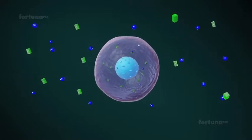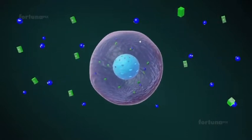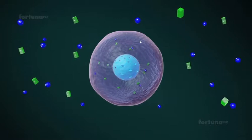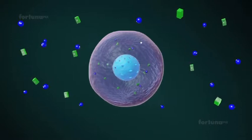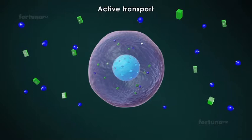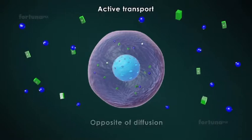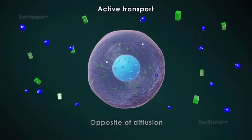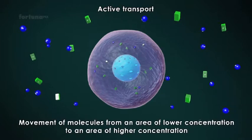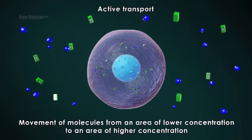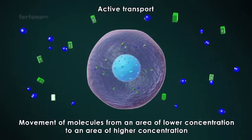There is a third process that allows for the movement of molecules across cell membranes. This process, known as active transport, is opposite of diffusion. This involves the movement of molecules from an area of lower concentration to an area of higher concentration.